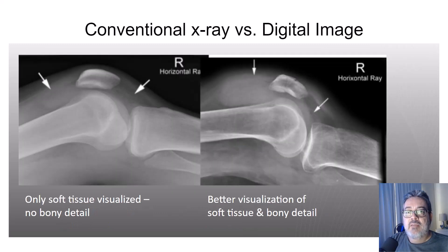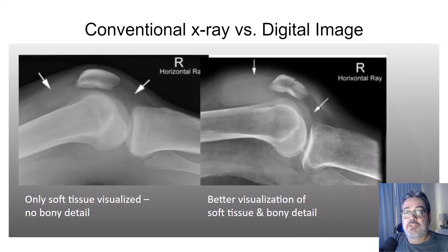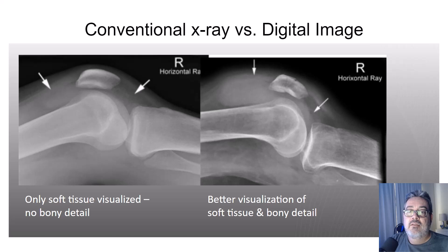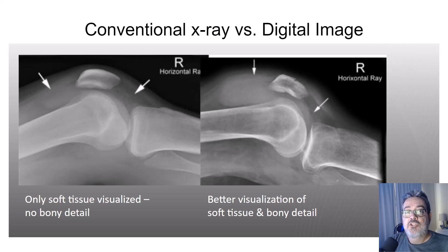With film-screen imaging, you had to rely on technical factor changes to kVp and mAs to visualize soft tissue differences. You might not see edema underneath the patella, as in these radiographs, and you lose bony detail with that type of technique. Now you're able to window level in order to see soft tissue and bony detail within the same image with tissue equalization.